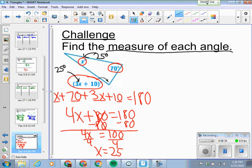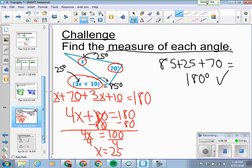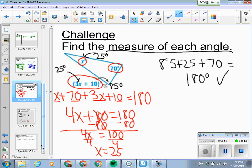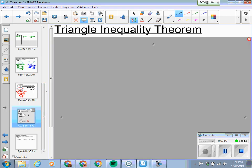Now notice the question. The question asks for the measure of each angle, not X. So we're not quite done yet. We take that 25 and plug it in for every X we see. So right there we know X is 25 degrees. We've got our 70. Now over here we plug 25 in for this X. 3 times 25 is 75. 75 plus 10 equals 85 degrees.